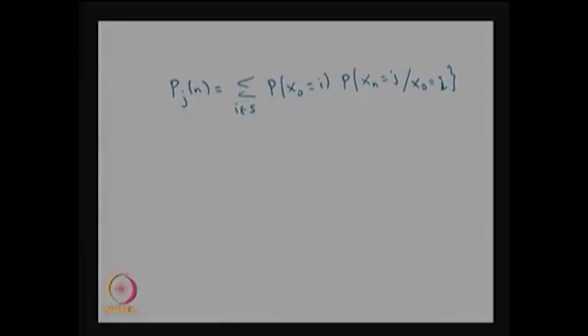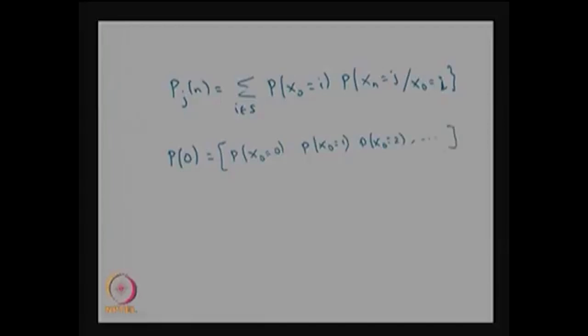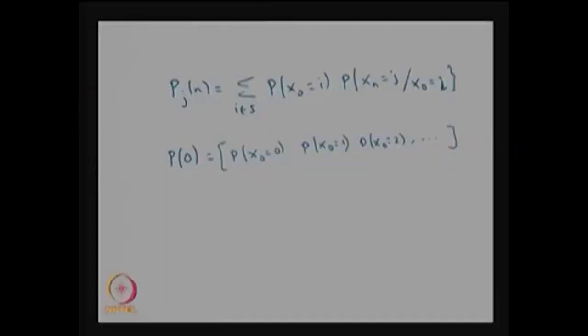The distribution of x0 is given as the vector p(0). This vector consists of the probabilities that x0 takes value 0, value 1, value 2, and so on. Unless otherwise mentioned, the state space is taken as 0, 1, 2 and so on. This is the initial probability vector or initial distribution vector.